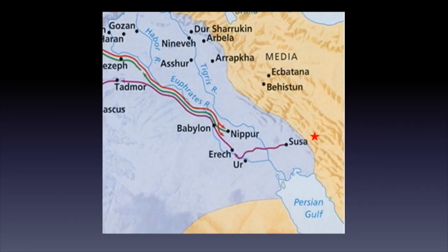Around 445 BC, in the Persian capital of Susa, we first meet the man Nehemiah. He is given permission by the king of Persia to travel to Judah and rebuild the walls of Jerusalem. This is the extraordinary adventure we are about to study, because it's not only about the rebuilding of walls, but the renewing of lives, faith, and a national identity. Nehemiah is a story worth knowing, meditating upon, and remembering.